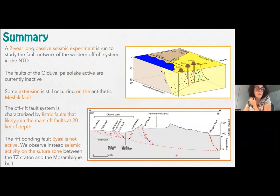To summarize, we present a passive seismic experiment of about two years to study the network of faults in the western off-rift system on the northern Tanzania divergence. The faults of the Olduvai paleo lake are not currently active, but there is still some extension on the antithetic Meschili fault. Some listric faults in the off-rift system probably join the main rift at about 20 kilometers depth. The Yasi fault is currently not very active, and conversely, we see some activity on the suture zone between the Tanzania Craton and the Mozambique belt.